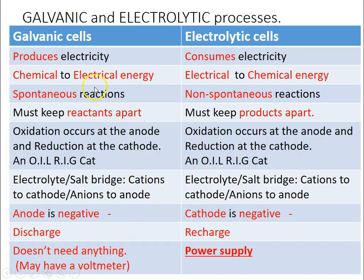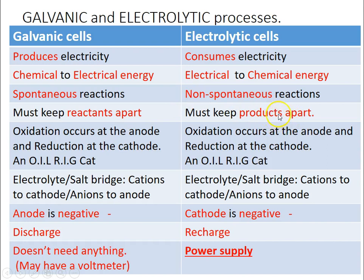This is an overview of the differences between them. Galvanic produces electricity — turning chemical energy into electrical energy — whereas electrolytic consumes electricity from a power supply to turn electrical energy into chemicals. Galvanic is spontaneous so you have to keep the reactants apart. Electrolytic is non-spontaneous, but because the products are opposite to each other the products would undergo a spontaneous reaction, so you have to keep the products separate.